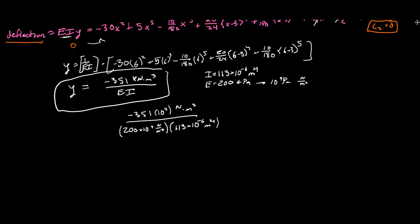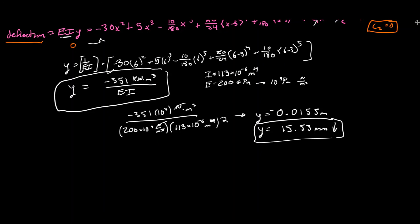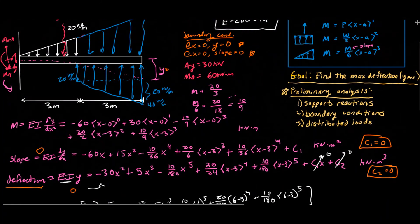E is 200 times 10 to the ninth newtons per meter squared, and I is 113 times 10 to the negative six meters to the fourth power. The meters to the fourth cancel, and the newtons cancel, leaving meters cubed over meters squared - which is just meters, which is what we want. We get y equals negative 0.0155 meters, which is negative - so that's going down. Converting to millimeters gives y equals 15.53 millimeters downward. That's our total deflection.